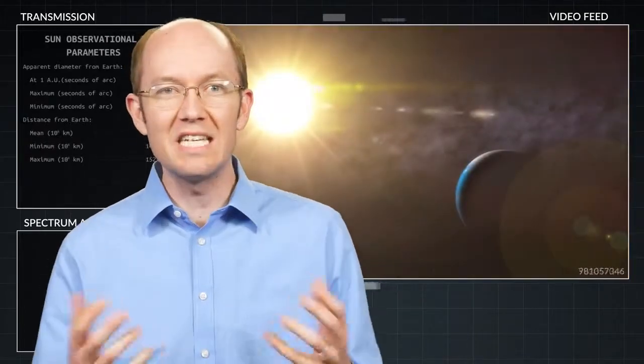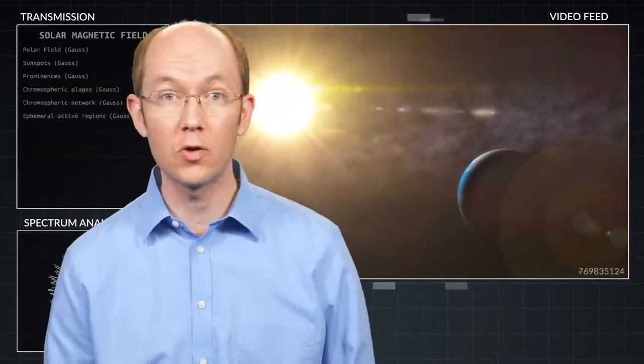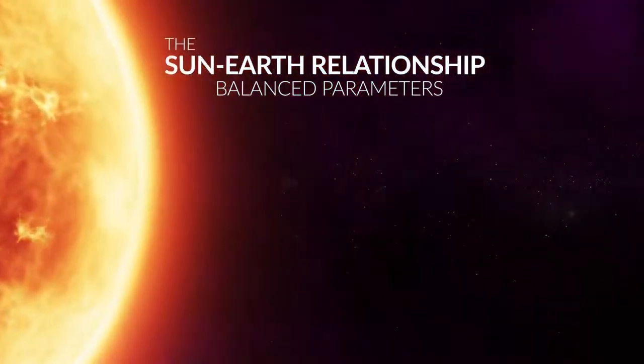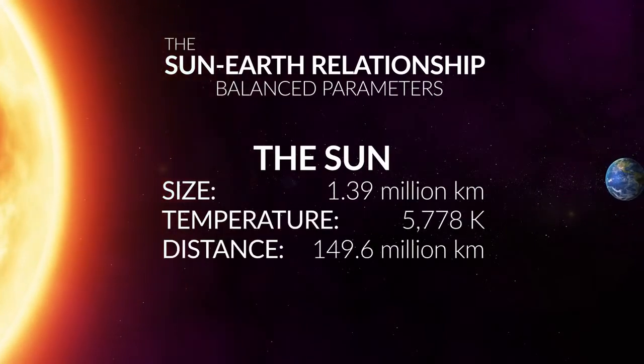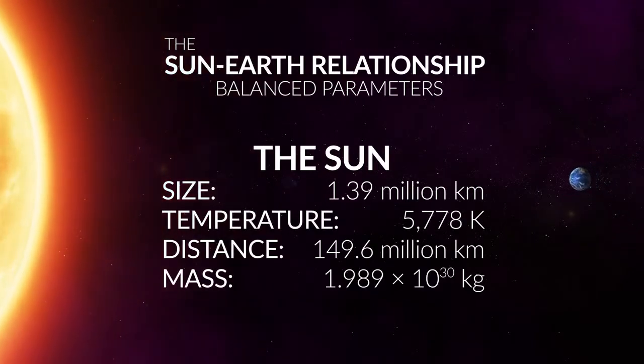Life's very existence depends upon the light that Earth receives and the well-balanced parameters of the Sun's size, its temperature, distance, and mass. All of them are very important to the Sun-Earth relationship.